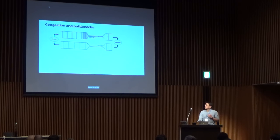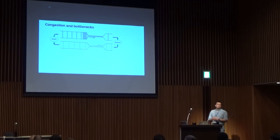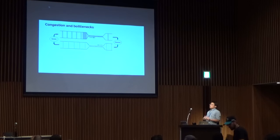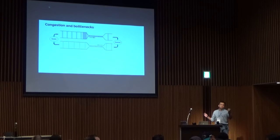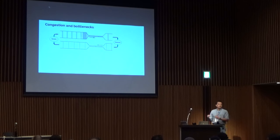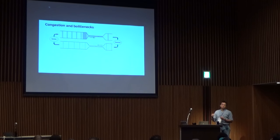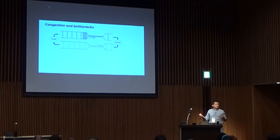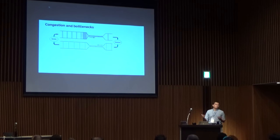Before talking about congestion control, we start with a description of what congestion is. We start with this simple graph — you have a sender and a receiver going through a bottleneck. As you send faster and faster, when you finally reach the bottleneck rate, say 100 megabits per second, the queue starts to form.